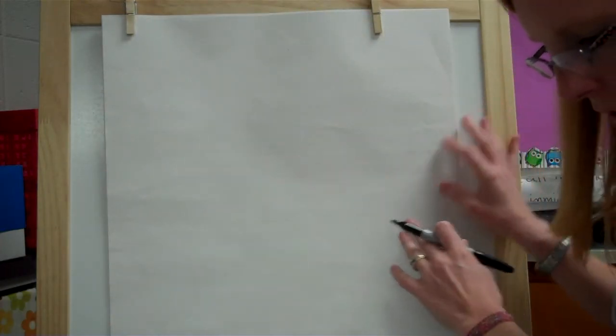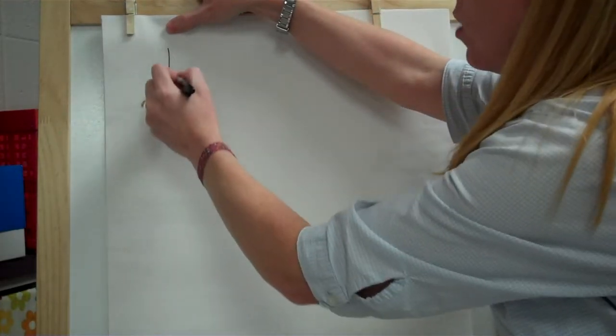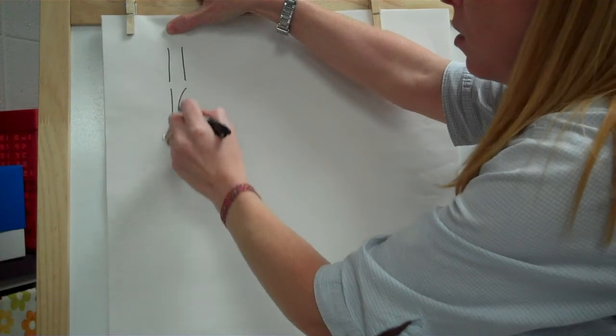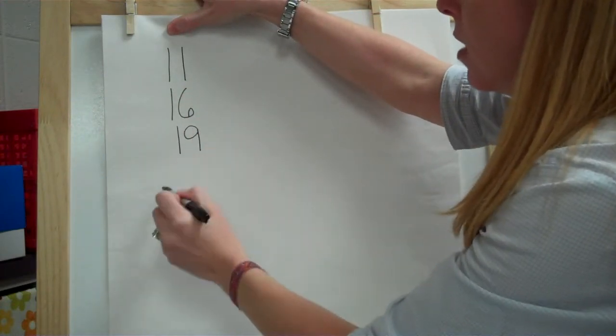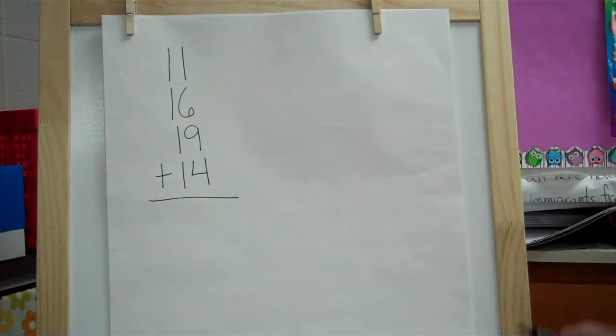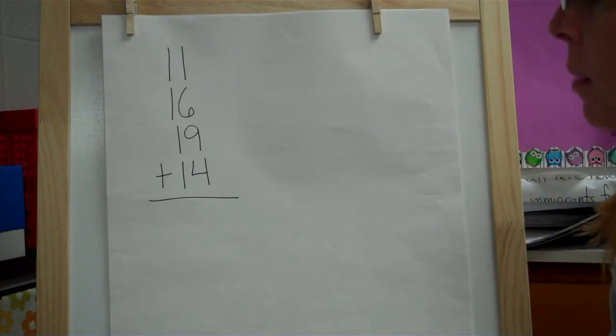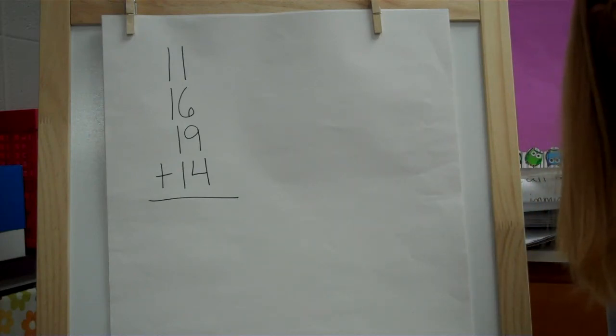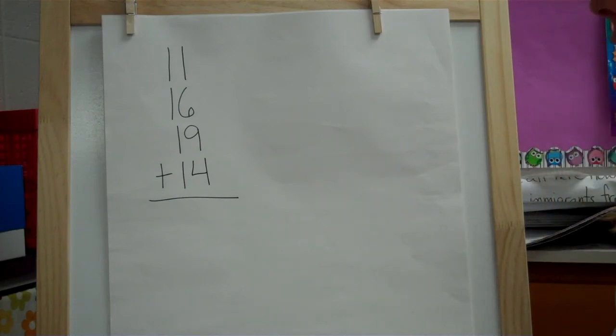One more and I'm going to let you try this one on your own. So this one we're going to have 4 numbers to add: 11 plus 16 plus 19 plus 14. So I'm going to have you pause the video and copy this one down and try to do it. Use those properties to add and then press play again and we'll work it out together.